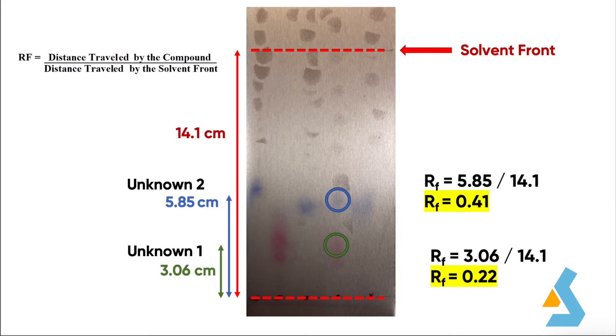Our fourth sample was an unknown mixture. So, in this lane, we identified two distinct spots. In order to identify these spots, we first measured how much they traveled from the baseline, and then calculated retention factor values for each. Retention factor value for the first unknown compound has been found as 0.22, and the retention factor value for the second unknown compound has been calculated as 0.41.